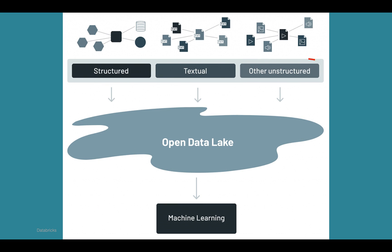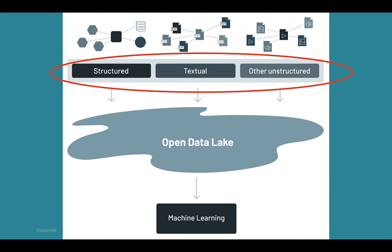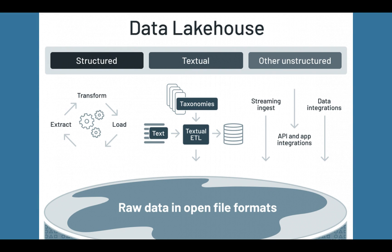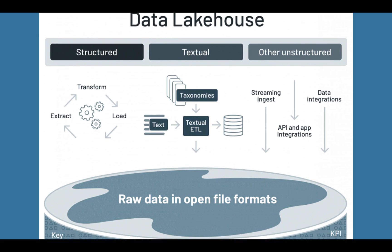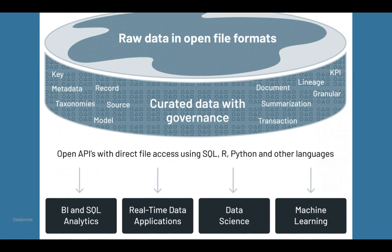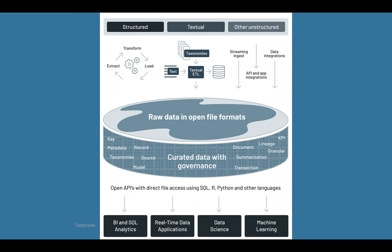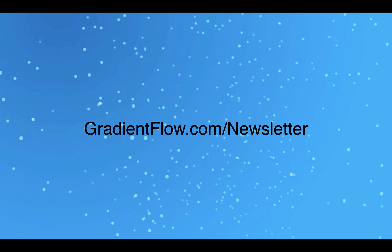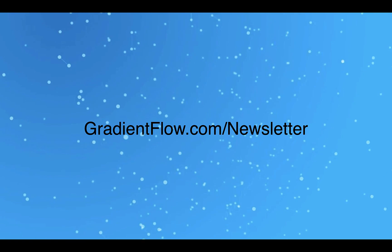The data lake is an amalgamation of the many different kinds of data found in a corporation, but it has no support for transactions and no enforcement of data quality or governance. A new architecture class called Data Lakehouse enables open direct access via open formats, provides native class support for data science and ML, and offers best-in-class performance. For more, see Gradient Flow newsletter number 35.